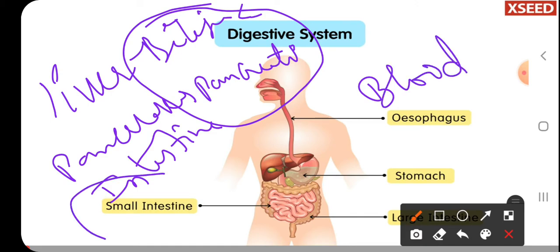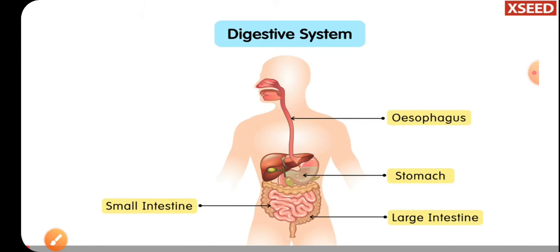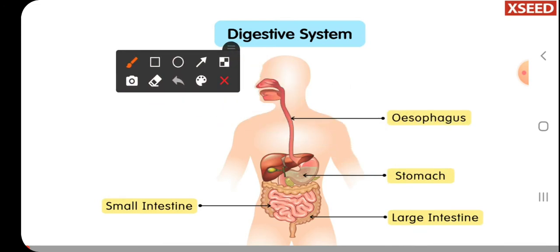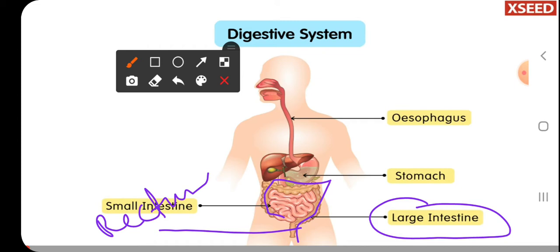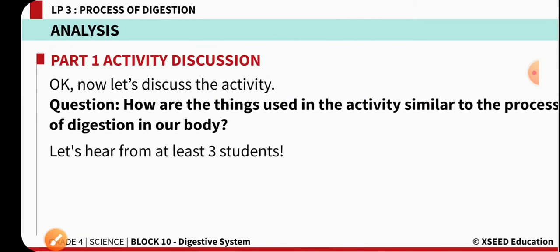After complete digestion, the digested food is immediately absorbed into the blood. The small intestine is the most important part where complete digestion of food material occurs and absorption into the blood also takes place. The remaining undigested particles travel through the length of the large intestine, are stored in the rectum region for a short duration, and are then sent out of the body through the anus.